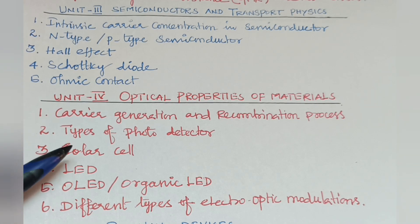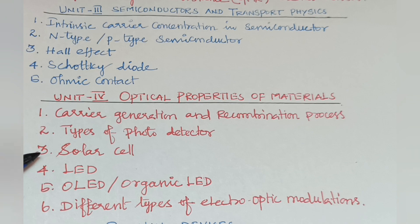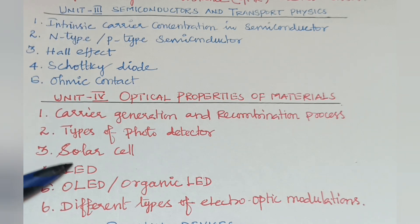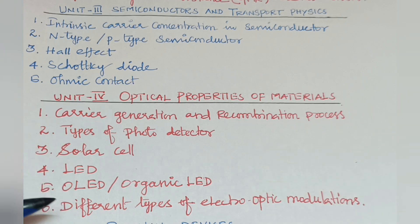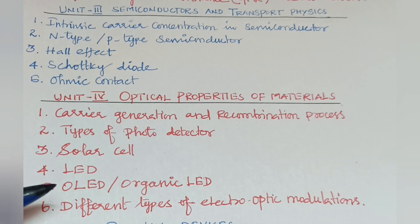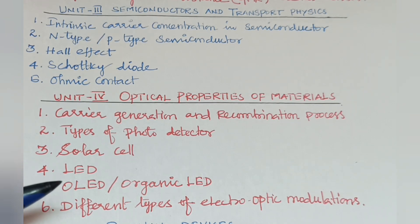The third question is Solar Cell, which is very important for 16 marks. The fourth one is LED — Light Emitting Diode. Solar Cell, LED, and OLED all follow the same structure: first is principle, second is construction, third is working, then diagram, advantages, disadvantages, and applications.